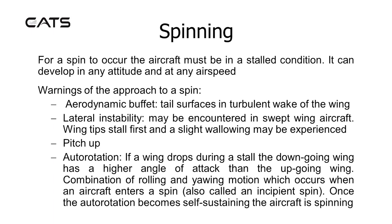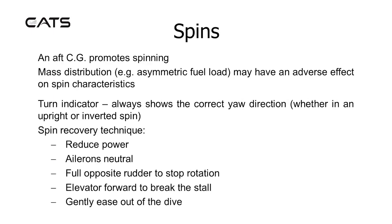Spinning: for a spin to occur, the aircraft must be in a stalled condition, and it can develop in any attitude and at any airspeed. Warnings of the approach to a spin include aerodynamic buffet from tail surfaces in the turbulent wake of the wing, lateral instability — which may be encountered in swept wing aircraft as the wingtips stall first and a slight wallowing may be experienced — and pitch up. Autorotation: if a wing drops during a stall, the down-going wing has a higher angle of attack than the up-going wing, creating a combined rolling and yawing motion which occurs when an aircraft enters a spin, also called an incipient spin. Once the autorotation becomes self-sustaining, the aircraft is spinning. An aft CG promotes spinning, and mass distribution — for example an asymmetric fuel load — may have an adverse effect on spin characteristics.